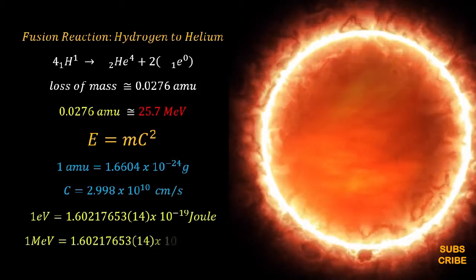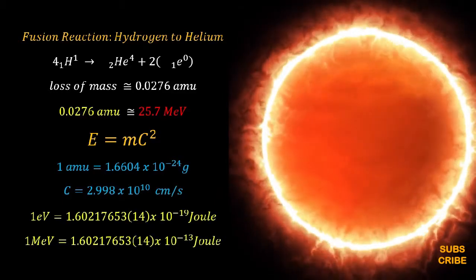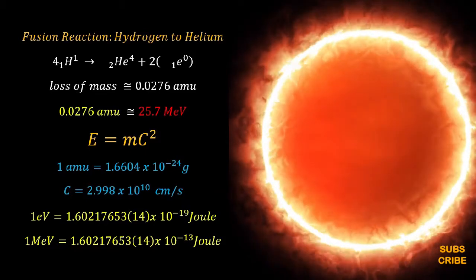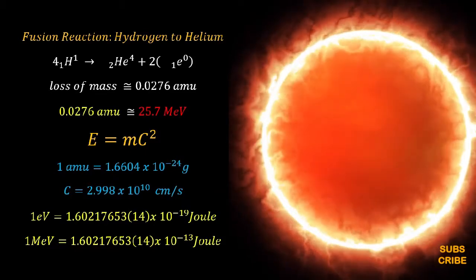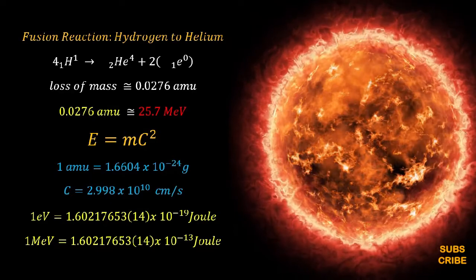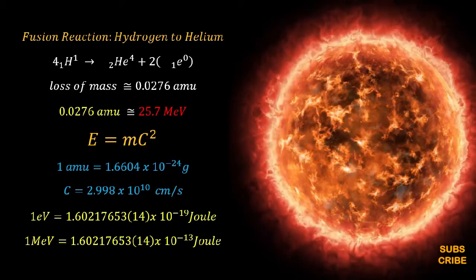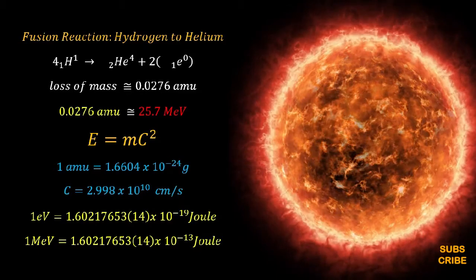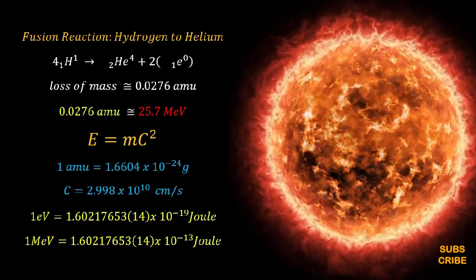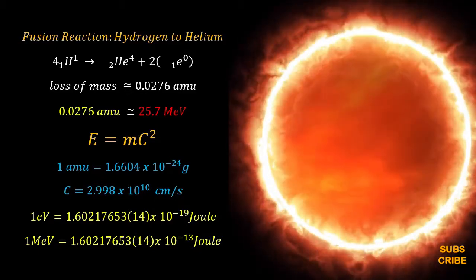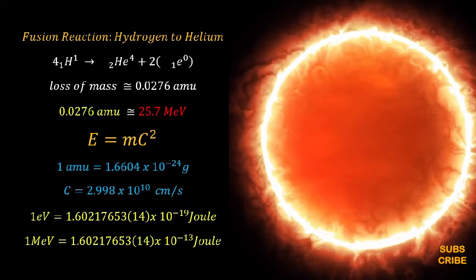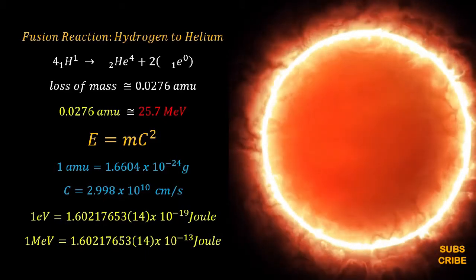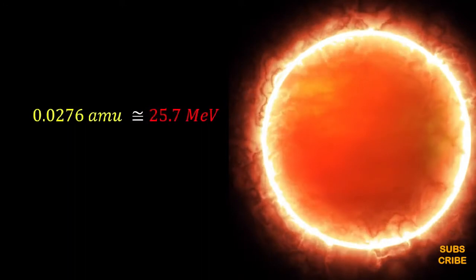The speed of light is 2.998 times 10 raised power 10 centimeters per second. Thus the energy produced by one atomic mass unit would be equal to 1 electron volt, or in 1 million electron volt which is 1.602 times 10 raised power minus 13 joules.